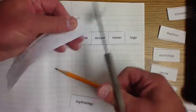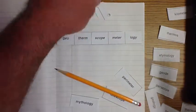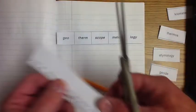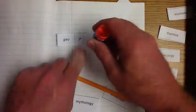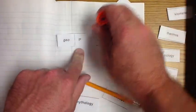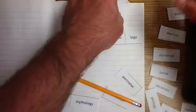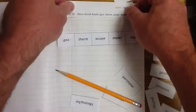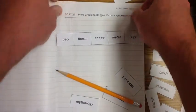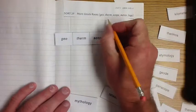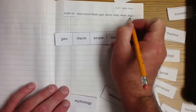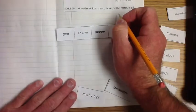I'm going to cut off the little piece there and I'm going to cut off the little piece here, that way I can glue my thing up at the top. I always like to glue this up at the top. I don't like writing it down because then that's more writing I have to do. But it also tells me everything I need to know so I don't need to worry about writing it down because I'm doing 29, more Greek roots: geo, therm, scope, meter, logy.